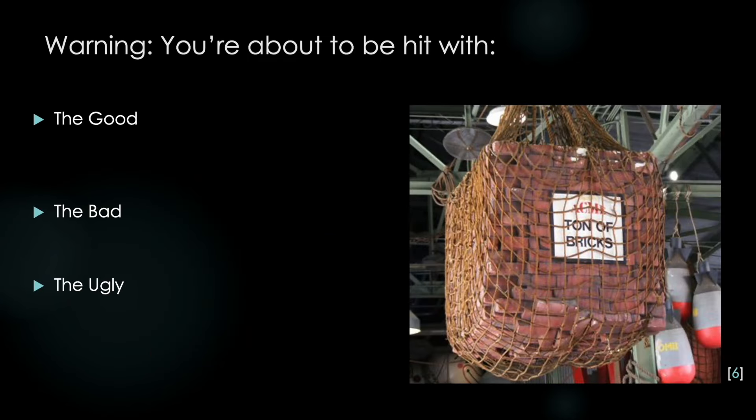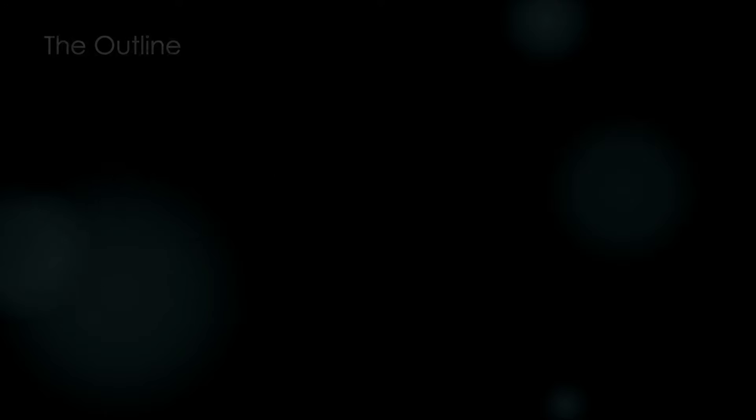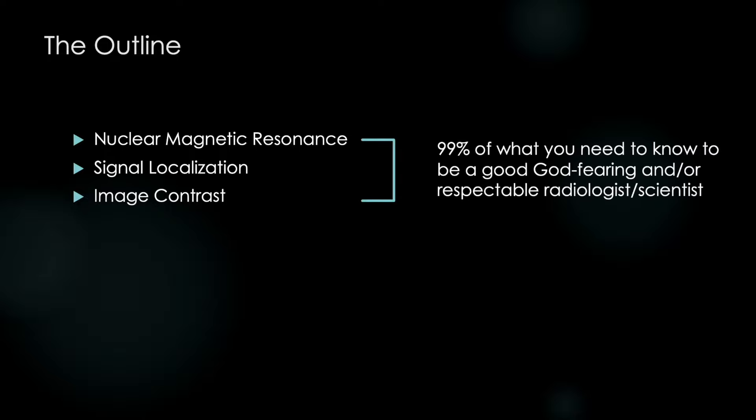So warning, you're about to be hit with a ton of bricks. The good news is you may have heard and know a lot of the terms we're going to talk about. The bad news is they haven't been taught in an intuitive way. And the ugly is everything else about MRI physics. So this is the outline we're going to follow. We're first going to talk about nuclear magnetic resonance and this amazing phenomenon we take advantage of in order to build these images. We'll then move on to discuss signal localization, which is essential for us to be able to build the picture. And finally, we'll discuss image contrast, where it comes from, and how it makes the pictures look like they do. And the good news is this is 99% of what you need to know to be able to be a good, God-fearing, and or respectable radiologist slash scientist.